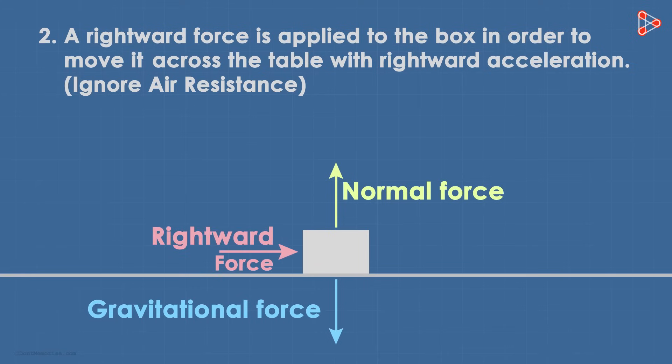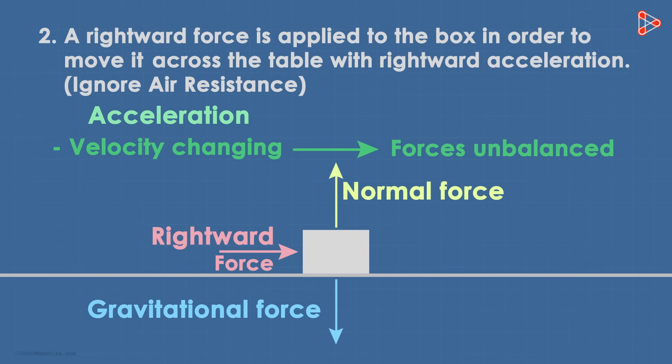Now we come to what's written. A rightward force makes the box move across the table with rightward acceleration. The word acceleration is very very important here. It means the velocity is changing and the fact that the velocity is changing implies that the forces on the box are unbalanced.